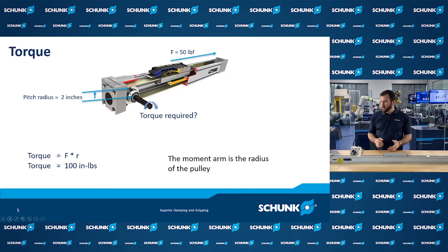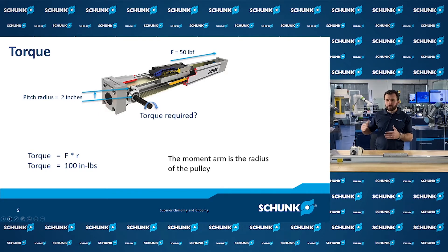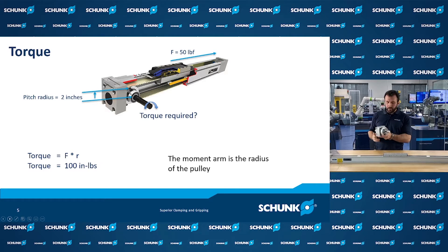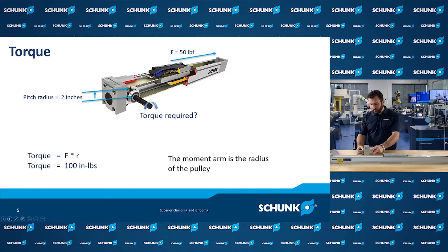Sometimes in motion control, it is that easy to see things. Here we're looking at a belt drive where the motor is driving a pulley which drives the carriage, and the carriage moves back and forth. In this application, the carriage would need to generate 50 pounds of thrust, and we want to know how much torque is required. It's still pretty clear to see a moment arm in this case. We have our belt drive with the pulley — the pulley's a circle — and the moment arm is actually the radius of that circle. So instead of force times distance, torque is now force times radius.